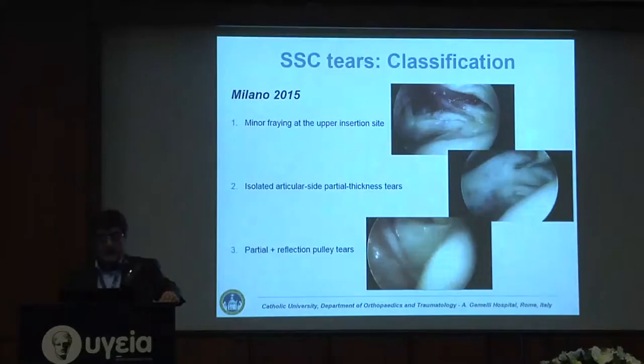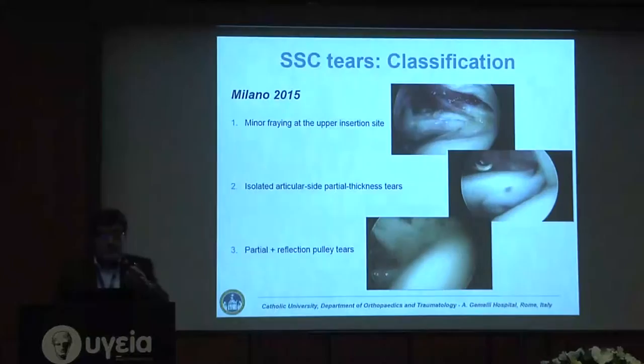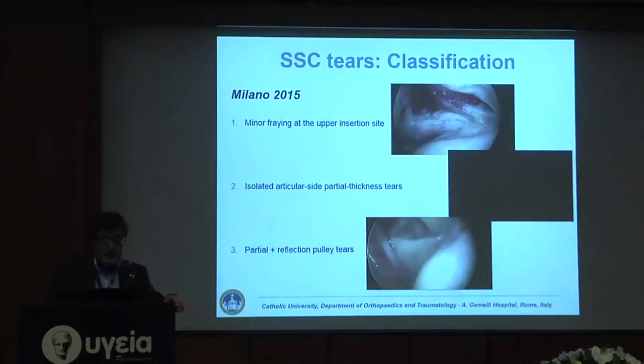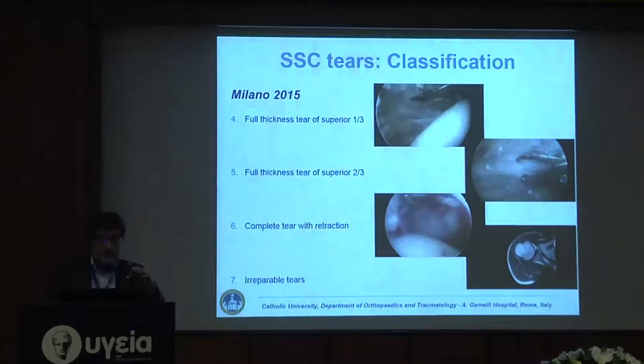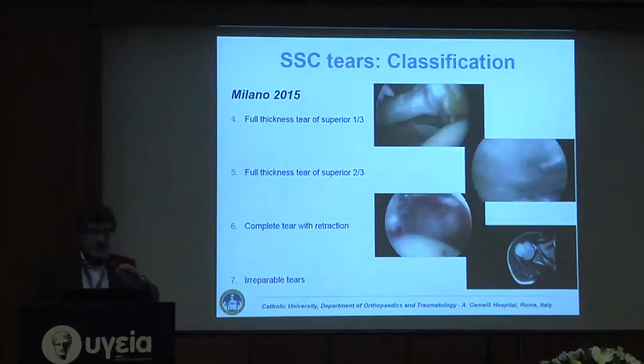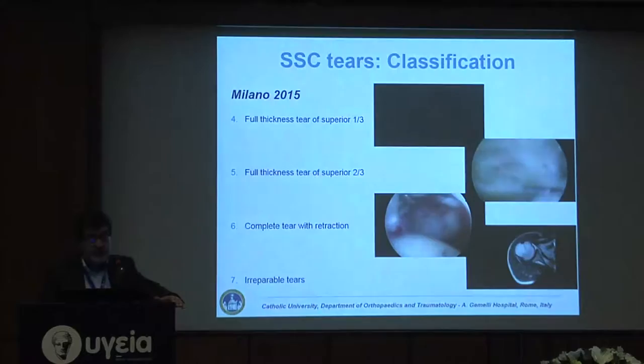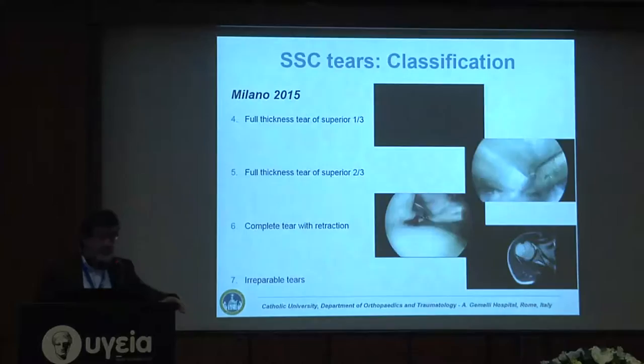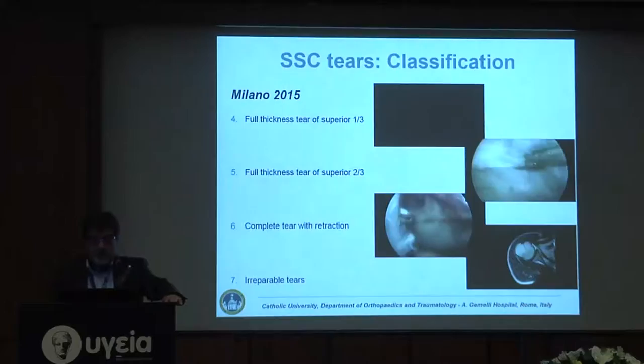We recently proposed a different classification. The first type is a minor strain of the upper articular side of the subscapularis. The second is an isolated articular-side partial tear, and the third is combined with the reflection pulley tear. Then we have a full-thickness tear of the superior one-third of the tendon as type four, and type five is a full-thickness tear of the superior two-thirds. Type six is a complete tear, and type seven is an irreparable tear with fatty infiltration.